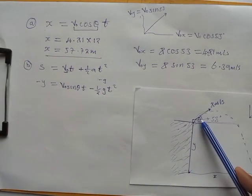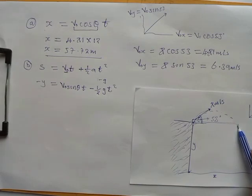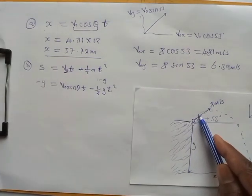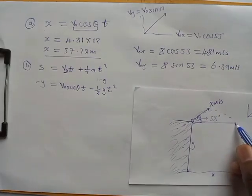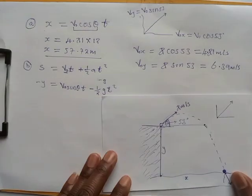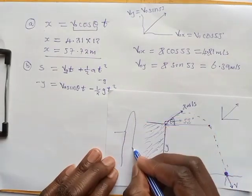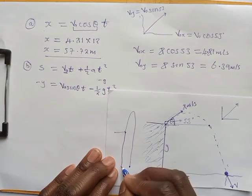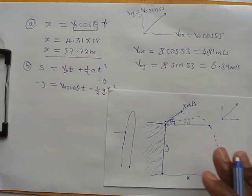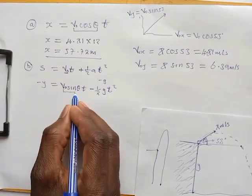The reason we write negative y is that once the particle returns to the original launch height, its displacement is zero, and as it continues downward beyond that point, the displacement becomes negative. So any height below the launch point is treated as a negative displacement. This is where many people make mistakes — they don't account for the negative sign.